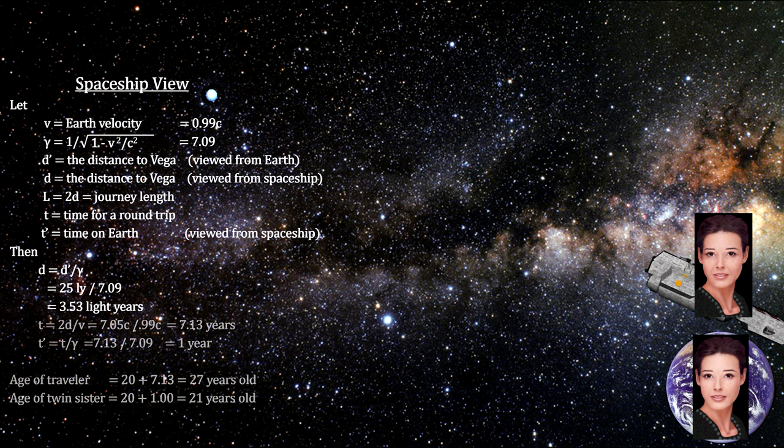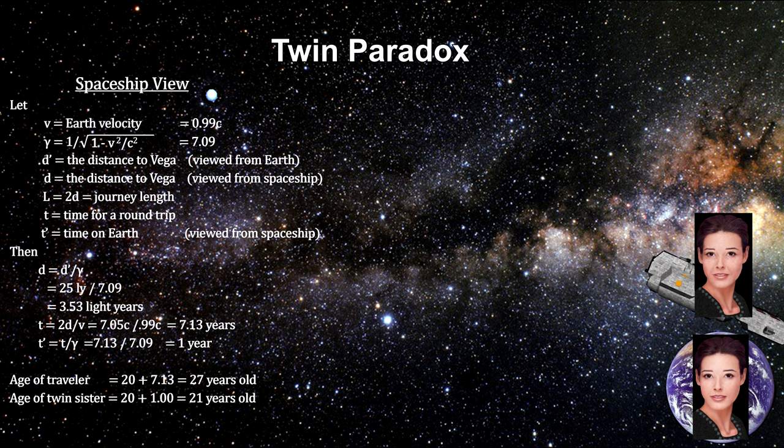By her observations, Earth's sister will be only one year older on her return due to time dilation. That's six years younger than she is, not 27 years older. How can it be that they are both older than the other? This is the paradox.